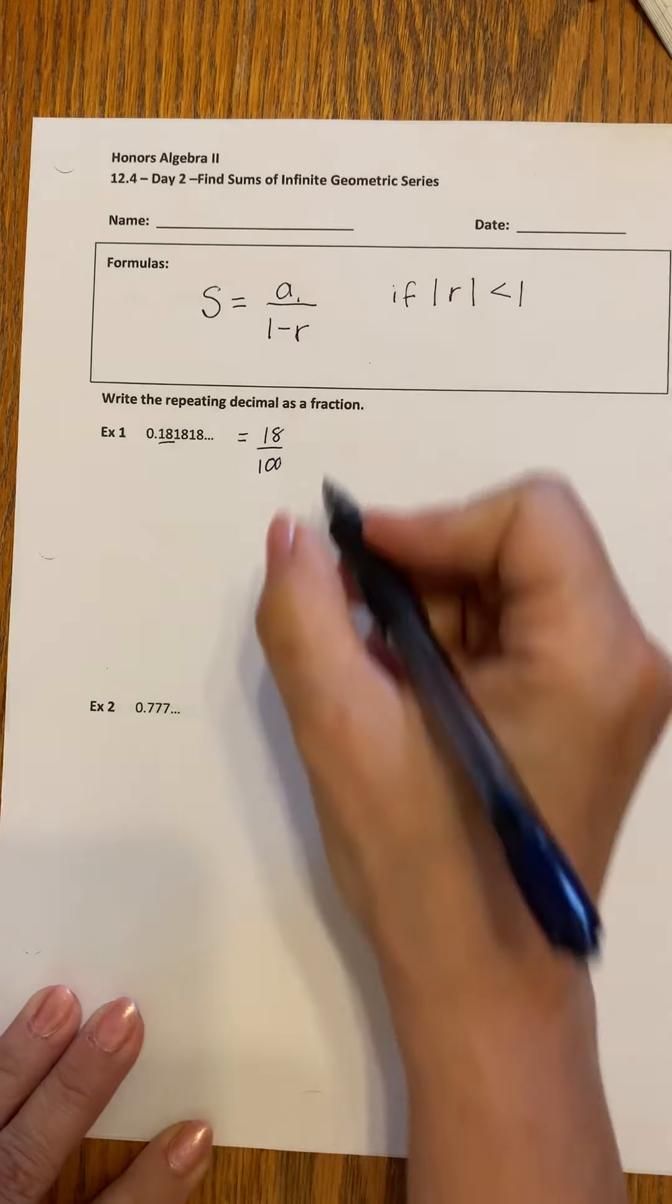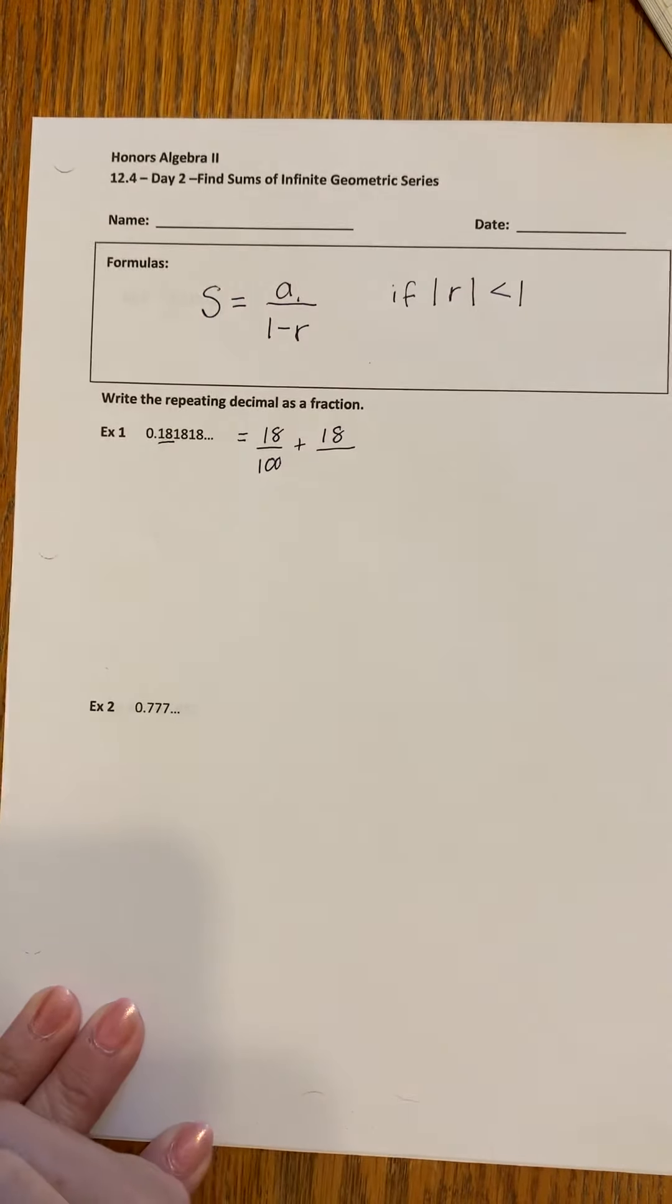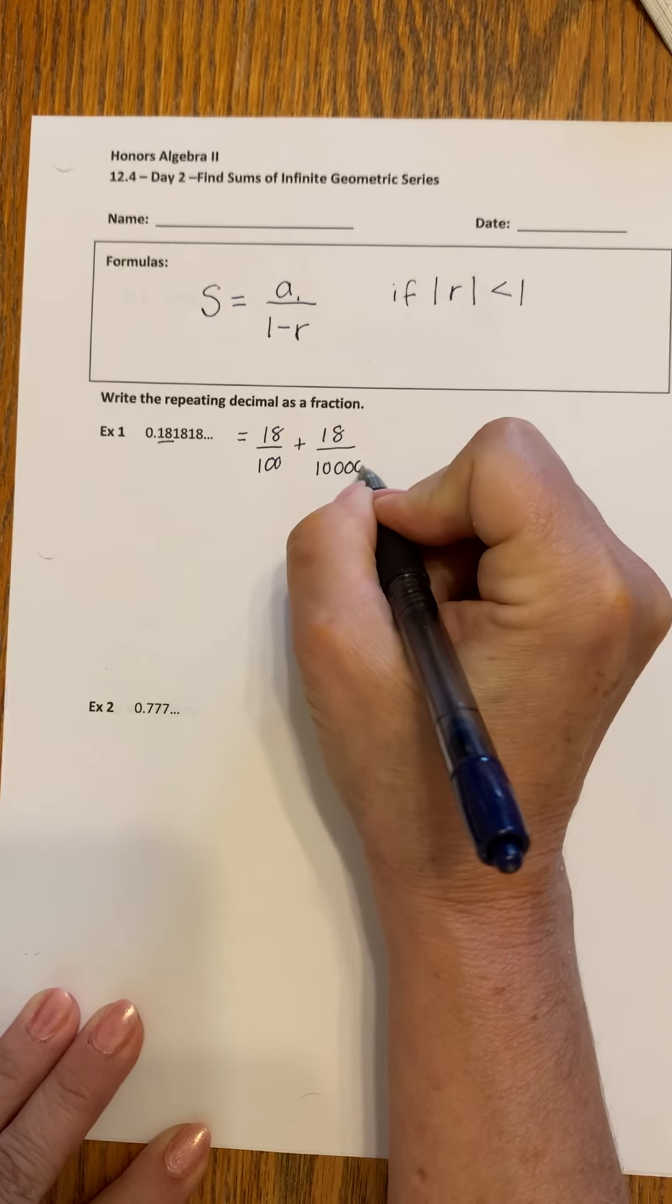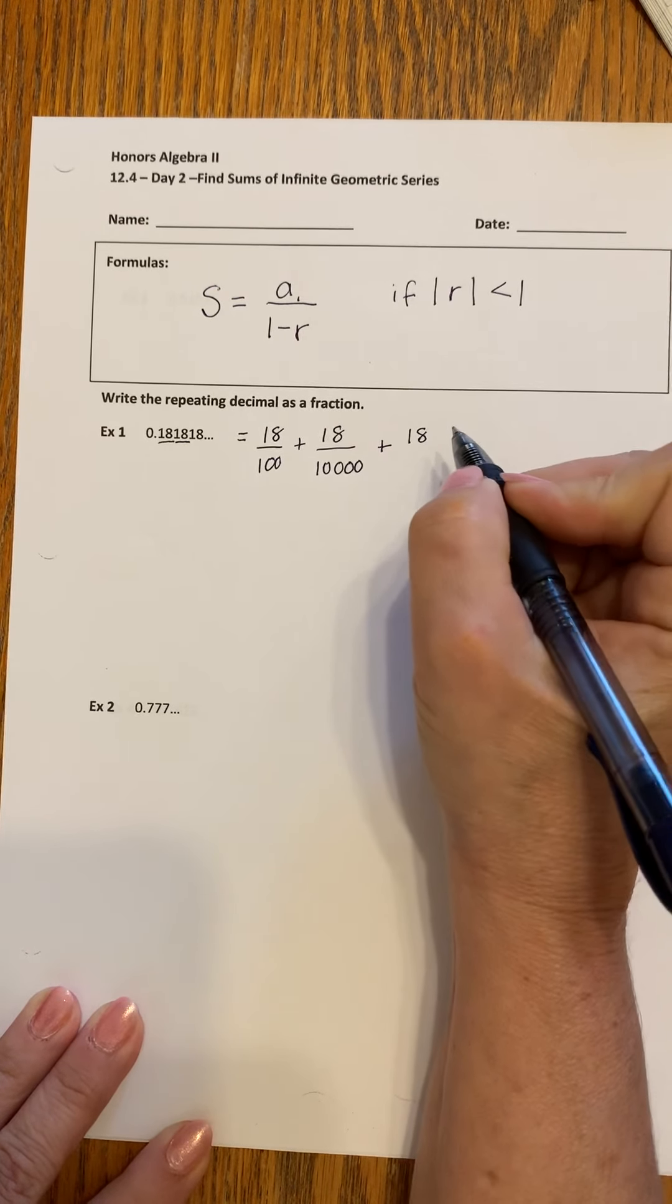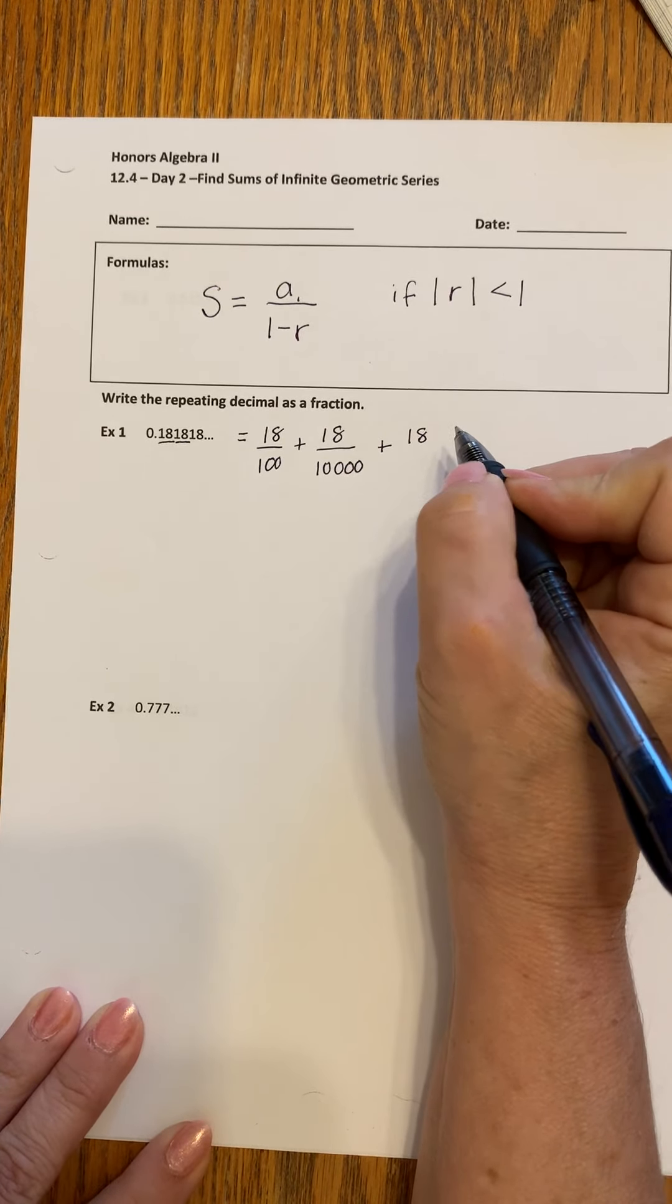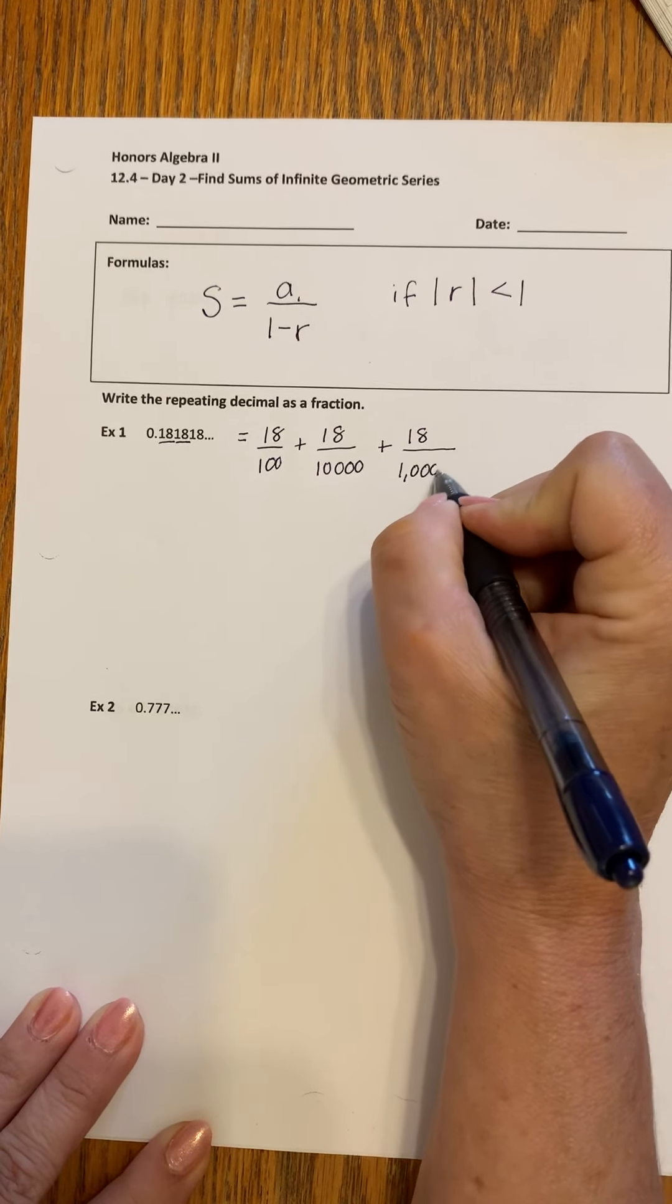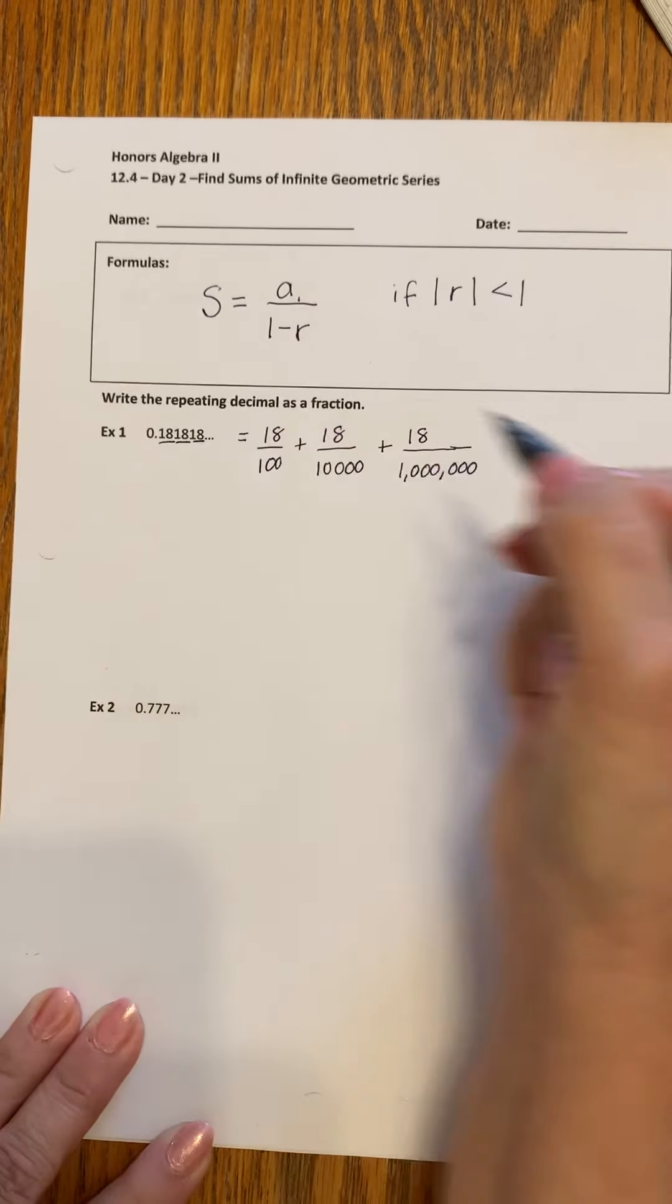That takes care of this part of it. And then we're going to have 18 over 10,000. That takes care of that part. And we're going to have 18 over looks like a million. And that takes care of that part. And we could keep going.